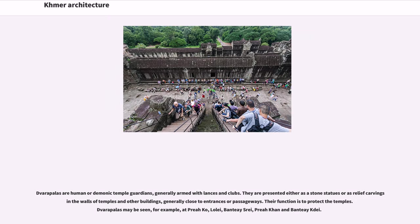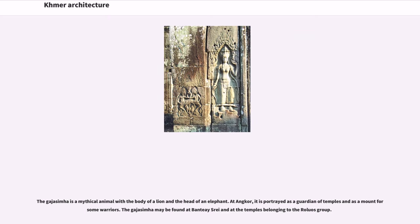Dvarapalas are human or demonic temple guardians, generally armed with lances and clubs. They are presented either as stone statues or as relief carvings in the walls of temples and other buildings, generally close to entrances or passageways. Their function is to protect the temples. Dvarapalas may be seen, for example, at Preah Ko, Lolei, Banteay Srei, Preah Khan, and Banteay Kdei. The Gajasimha is a mythical animal with the body of a lion and the head of an elephant; at Angkor, it is portrayed as a guardian of temples and as a mount for some warriors. The Gajasimha may be found at Banteay Srei and at the temples belonging to the Roluos group.